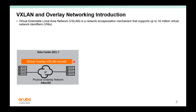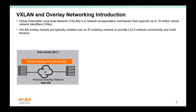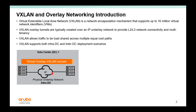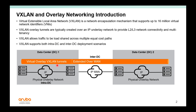VXLAN is a data plane tunnel that provides both Layer 2 and Layer 3 network connectivity for servers and virtual machines in different racks over an IP fabric. VXLAN allows traffic to be load-shared across multiple equal-cost paths in the physical IP underlay fabric. VXLAN supports both intra-data center, within the same DC, and inter-DC, across the WAN.